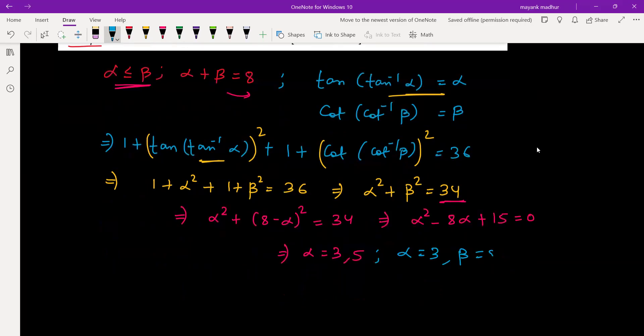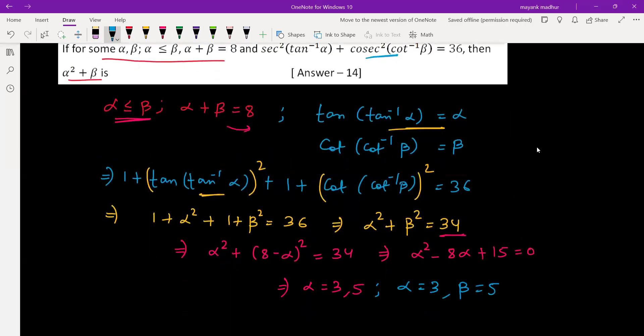Now what do we need? We need the value of α² + β, so it will be 9 + 5 = 14, and that is the answer.